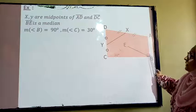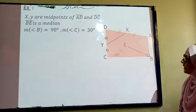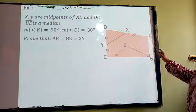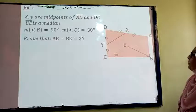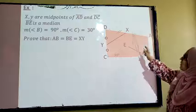Measure angle B is 90 degrees and measure angle C is 30 degrees. And it is required to prove that AB equals BE equals XY.